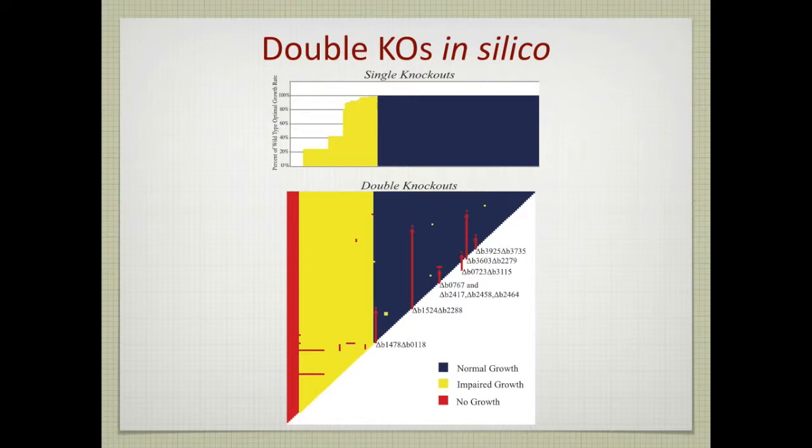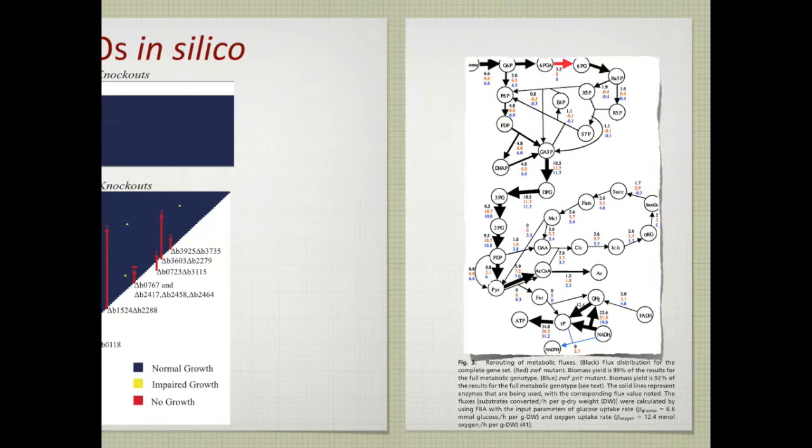You can calculate a lot of knockouts easily. But it's harder to make all the strains that correspond to these predictions.